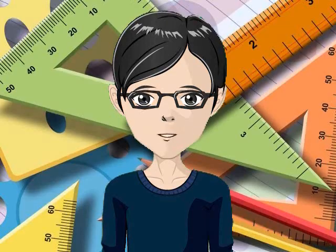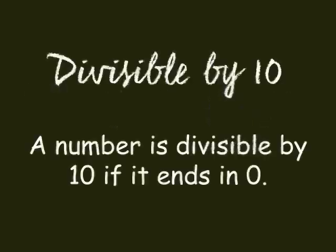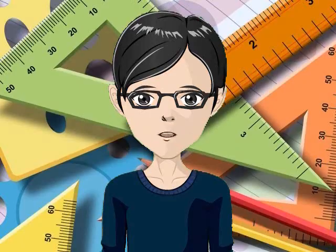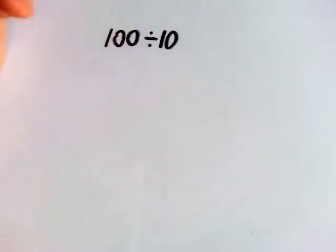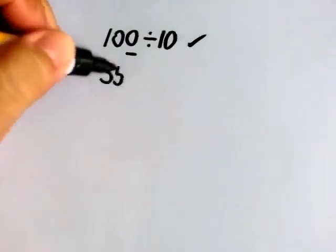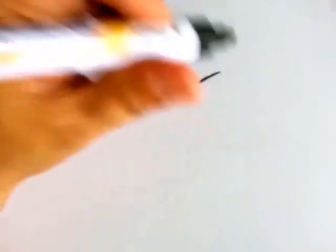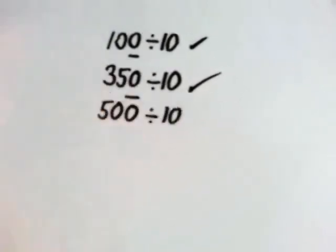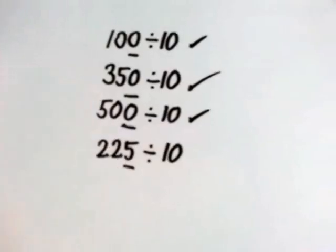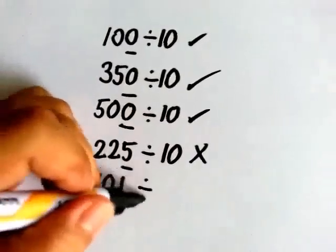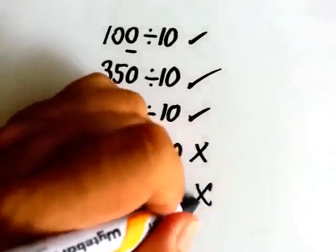Now we go to the rule of numbers divisible by 10. To quickly check if a number is divisible by 10, just check if the number ends in 0. Mas madali ito. Is 100 divisible by 10? Yes, it is — nag-e-end sya sa 0. Is 350 divisible by 10? Yes, it is. Is 500 divisible by 10? Yes, it is. Is 225 divisible by 10? No, it's not — nag-e-end sya sa 5. Is 101 divisible by 10? No, it's not — nag-e-end sya sa 1.